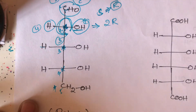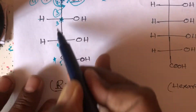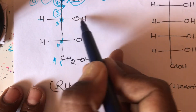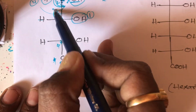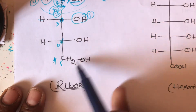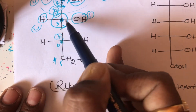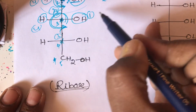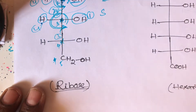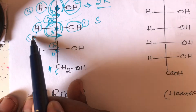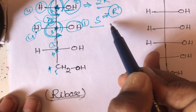For the third carbon: it is directly attached with oxygen, so oxygen gets first priority. Second place goes to the complete top carbon, third place goes to the bottom carbon, and fourth place goes to hydrogen. This is also anticlockwise direction, which gives S — but the least priority group is on the horizontal line, so S becomes R. Therefore, this is 3R configuration.